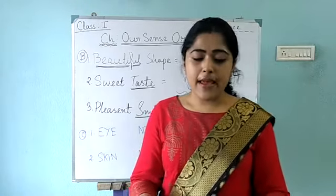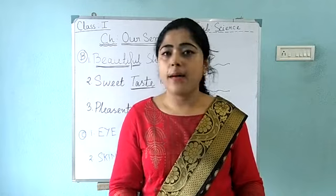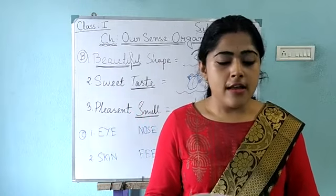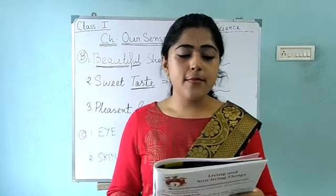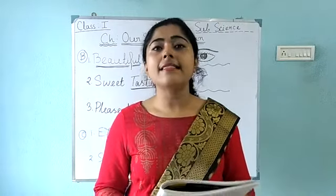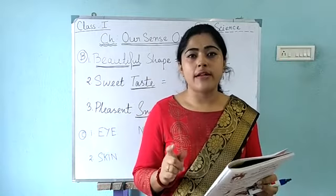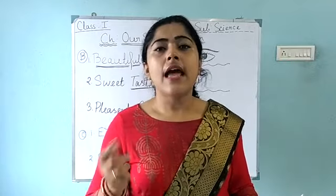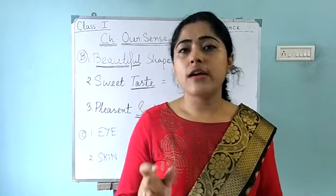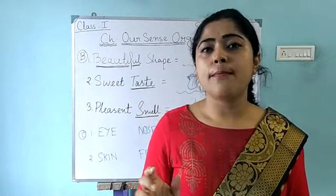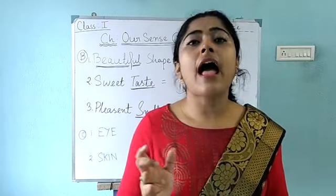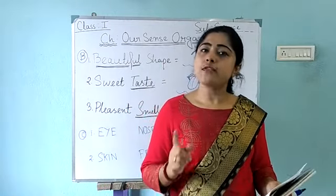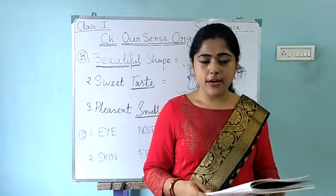Now go to the next page — page number 12. Question number C: you have to circle the odd ones out. There are 3 options, and the one that is not matching with the others is the one you have to circle.